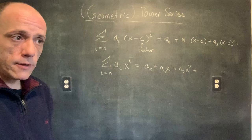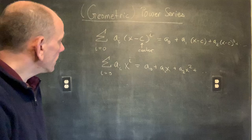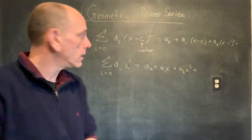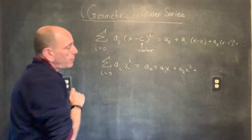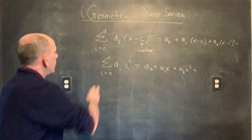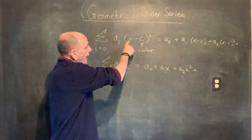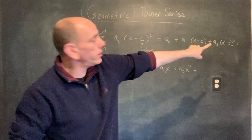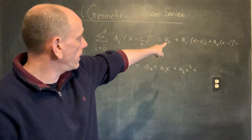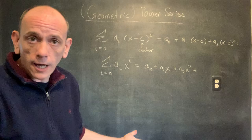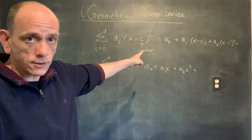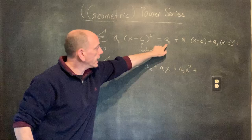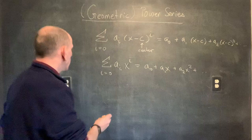These power series are fairly well-behaved in terms of convergence — they're never convergent on weird disjoint intervals. First, let's notice that a power series will always converge at its center. If I plug in x equals c, then every term has (c minus c), which is zero. So all those terms collapse to zero, and the entire sum equals just the constant term a_sub_zero. Clearly, that converges.